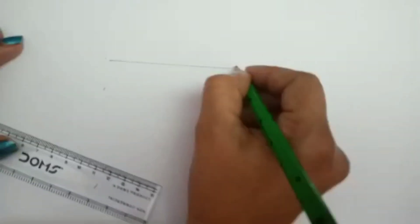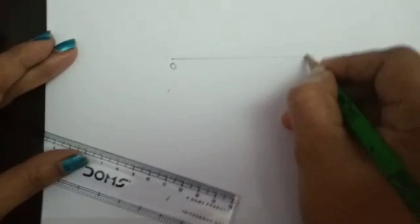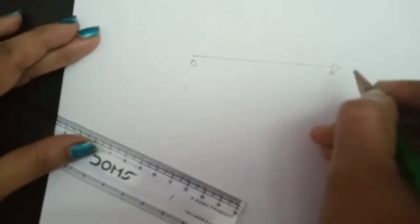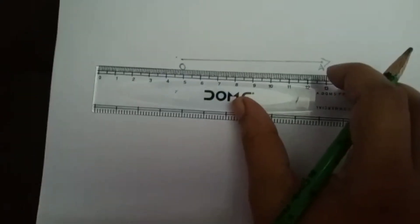I have taken an eight-centimeter ray and this point I'm marking as O, and this is my point A. Next I have to draw a 90-degree angle, so for that I'm keeping...